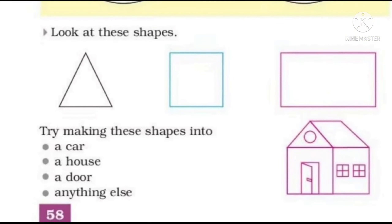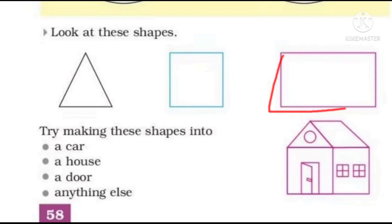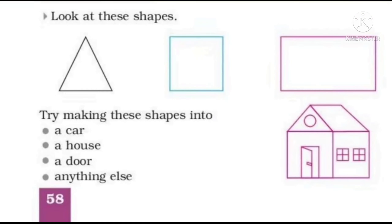Now let's see here. Look at these shapes. Yahaan par aapko kuch shapes diye hue hain. First is triangle. Yeh teen line se jo bana hai use hum kahte hain triangle. Next, yahaan par four lines se ek bana hai, aur is shape ki saari sides equal hain, so isko hum bolte hain square. And next this is rectangle. Rectangle mein do opposite sides equal hoti hain. Try making these shapes into a car, a house, a door, and anything else. Aap in sabhi shapes ka use karke kuch bhi bana sakte ho.